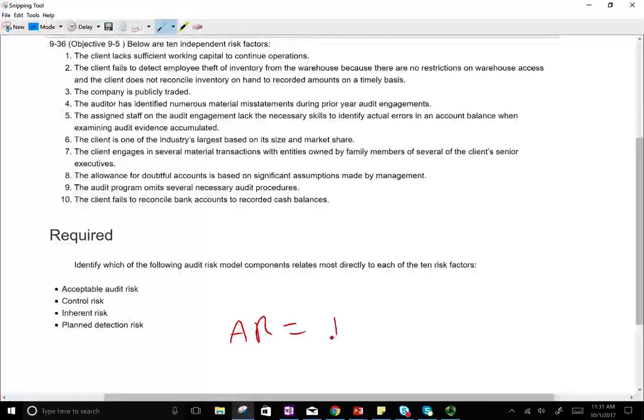Audit risk equals the inherent risk times the control risk times the detection risk. Remember, inherent and control risk are called risk of material misstatement. This is basically the audit risk model.